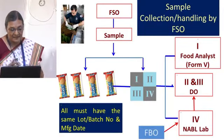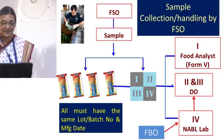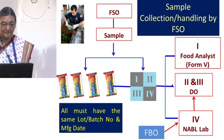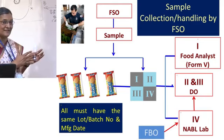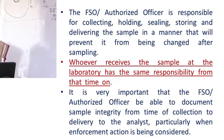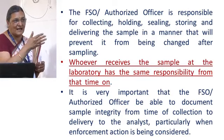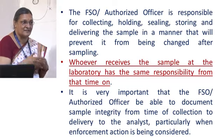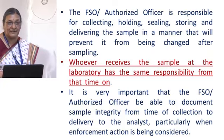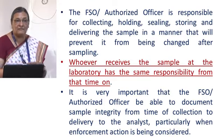The food safety officer is responsible for collecting, holding, sealing, storing, and delivering the sample in a manner that will prevent it from being changed after sampling. The authorised officer refers to officers at ports of entry for imports — airports and seaports — as opposed to designated officers. Whoever receives the sample in the laboratory has the same responsibility as the food safety officer.